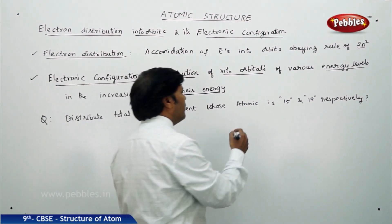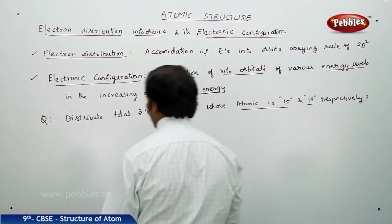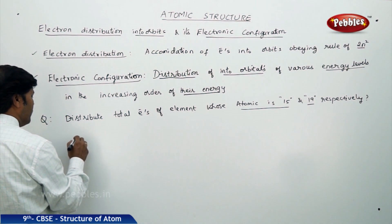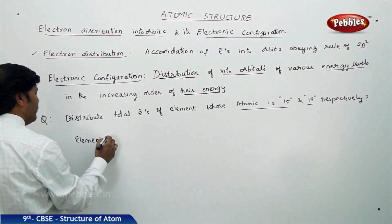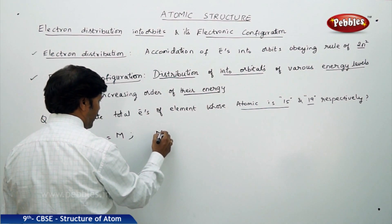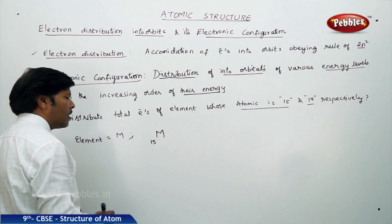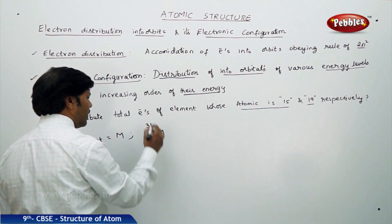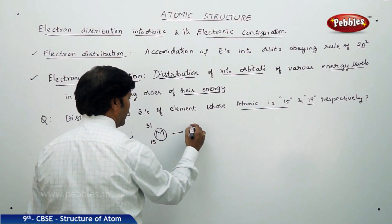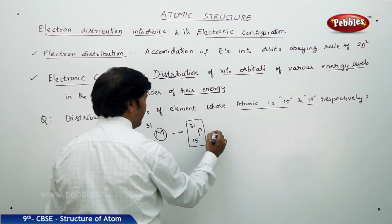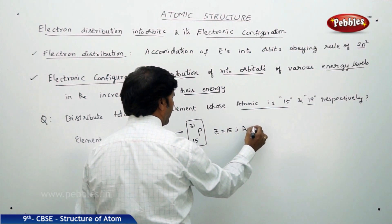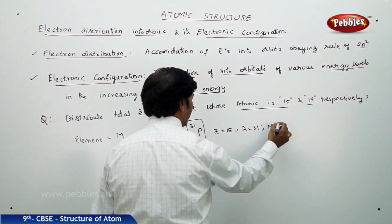One element has atomic number 15 and the other has atomic number 19. Let the element be M. Since its atomic number is 15, the atomic mass must be 31 — so M is phosphorus-31. From this: atomic number of phosphorus is 15, atomic mass is 31, and the number of neutrons is 16.